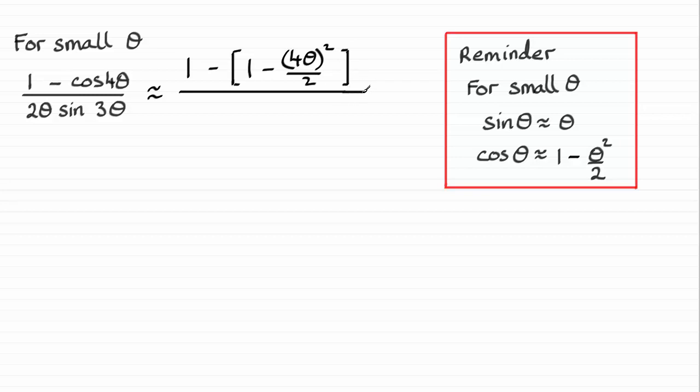In the denominator we've got 2 theta, and in place of sine 3 theta I just replace the theta with 3 theta, so it's going to be 2 theta times 3 theta.